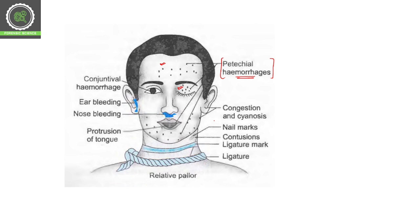More external postmortem findings include the ligature mark, which will be really very prominent. We can see contusion injuries. We can even see nail marks if the person strangling the victim had big nails or if the nails were present on the neck. We can also see congestion and sinuses in these areas, and conjunctival hemorrhages.